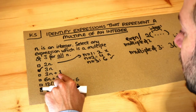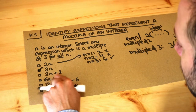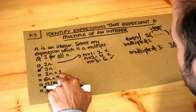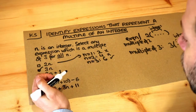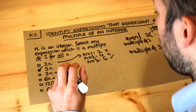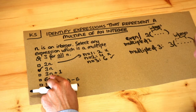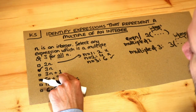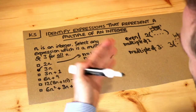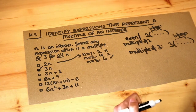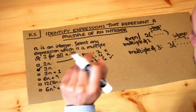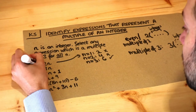What about 3n plus one? We can't factorize a three out of the whole expression — we can factorize three out of 3n, but not out of the one. So it's not guaranteed to be a multiple of three. In fact it's never going to be a multiple of three, because 3n is a multiple of three and adding one means it's always one more than a multiple of three — like ten is one more than nine. So this one doesn't match.